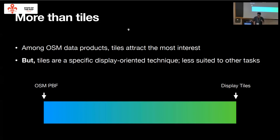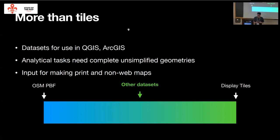So I have kind of a spectrum from raw OSM data all the way to display tiles. And there's this intermediate middle ground that I want to talk about today — datasets that you might want to use in something like QGIS or ArcGIS for any kind of analytical task where you might need to count features in an area. You can't really use tiles because tiles have implicitly chopped up the geometry into square boxes. And if you want to take base OSM features and use them with print maps or non-web maps, using things like Illustrator or QGIS.